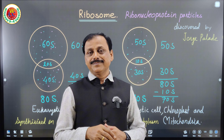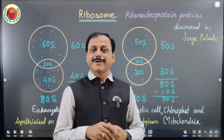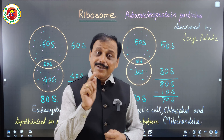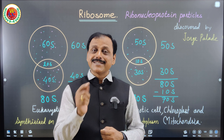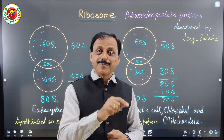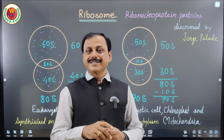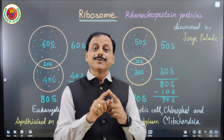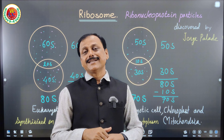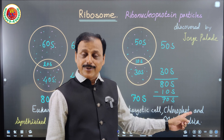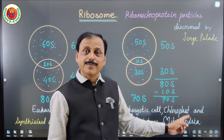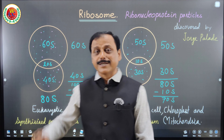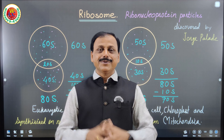An important point for NEET: if a question asks 'where are 70S ribosomes found?' and gives options like (A) prokaryotes, (B) chloroplast and mitochondria, (C) chloroplast, mitochondria and prokaryotes, (D) eukaryotic cells, mitochondria and chloroplast — the answer is (D), because mitochondria and chloroplasts are present in eukaryotic cells. So 70S ribosomes are found in eukaryotes too, since they contain mitochondria and chloroplasts.